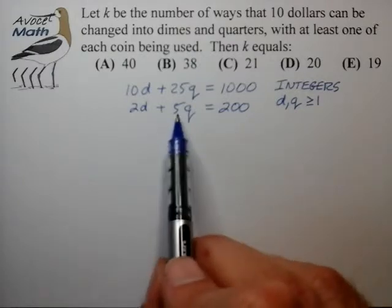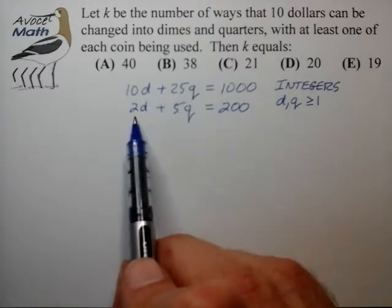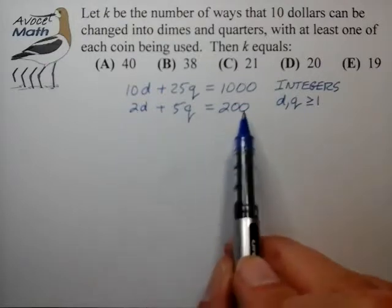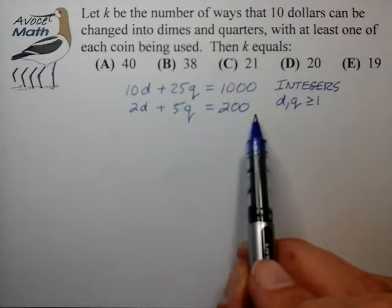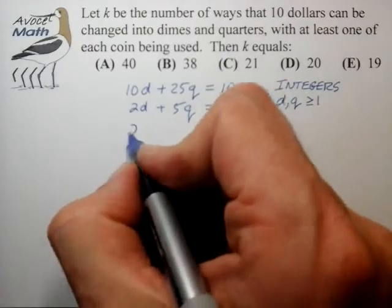We could proceed in one of two ways and it really doesn't matter which one of these terms we bring over to the right side. I'll choose in this problem solution to bring the 5q term over to the right-hand side. So let's go ahead and do that.